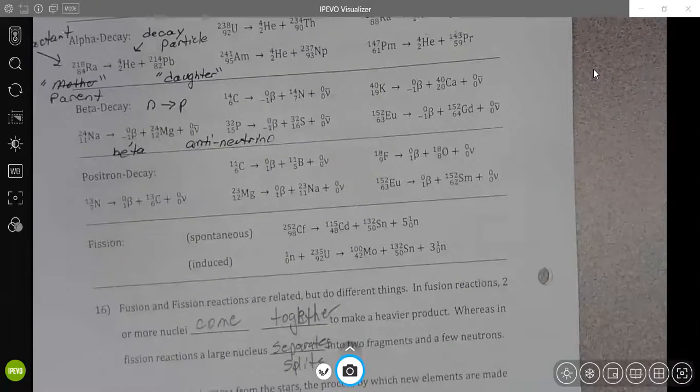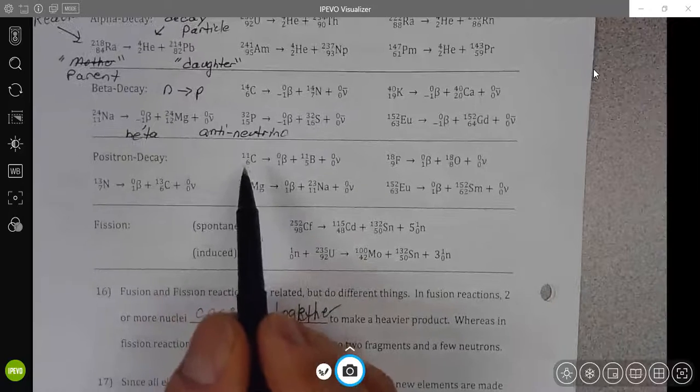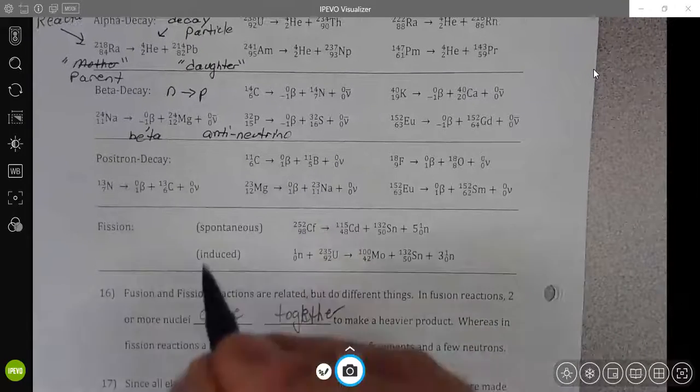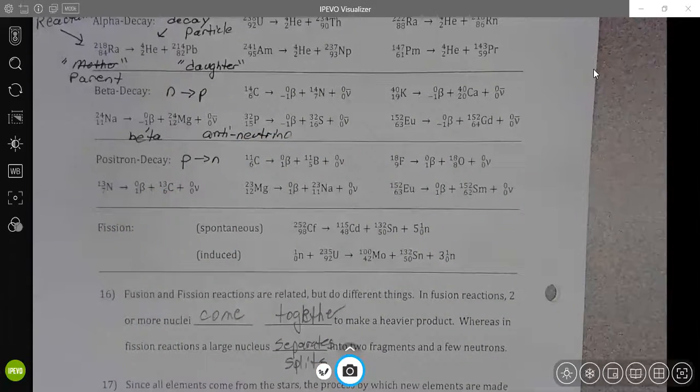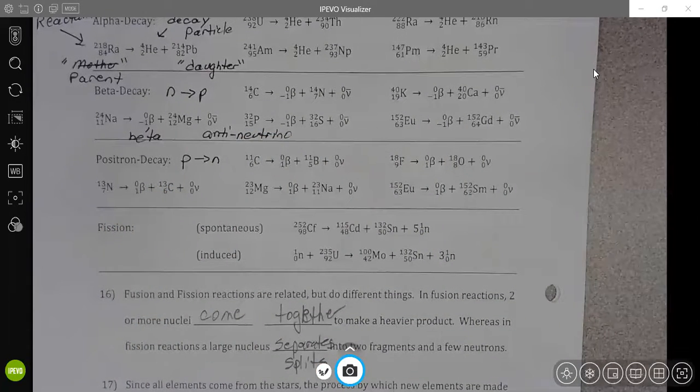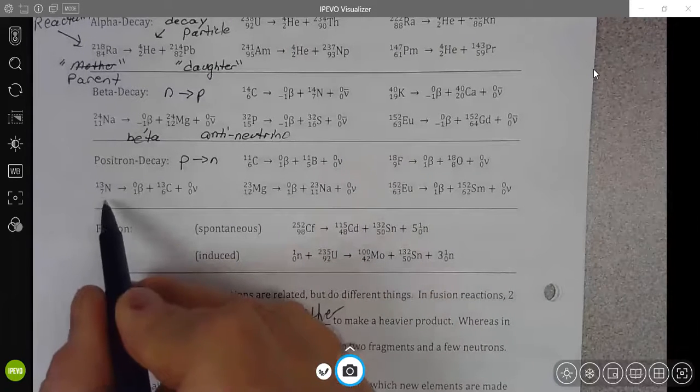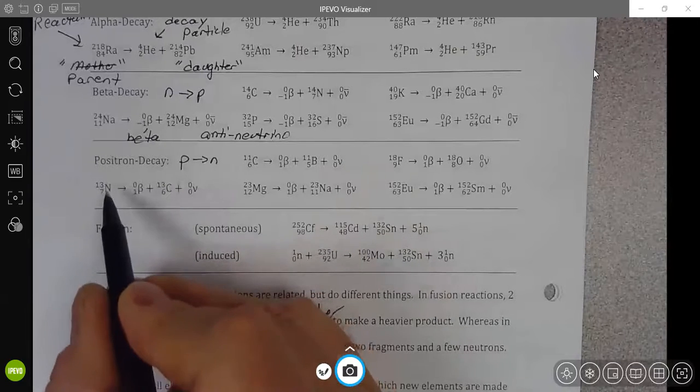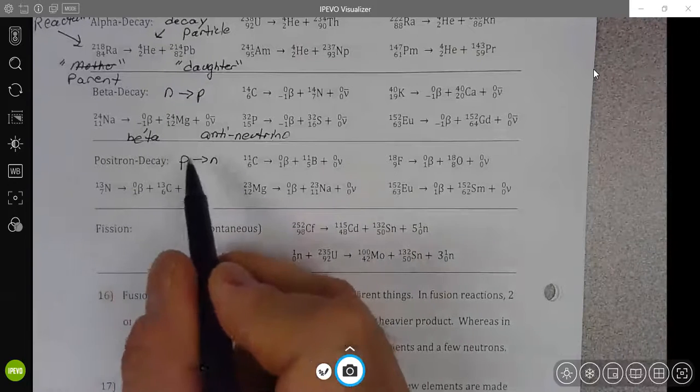When you continue through types of decay, you see positron decay. We briefly mentioned this in class already. Positron decay is what happens when a proton turns into a neutron. We see these kinds of decays occurring within the sun actually as a part of the CNO cycle. We can see this nitrogen 13, which would be part of the CNO cycle. There is no change in the mass number, but the atomic number goes down by one because a proton is turning into a neutron.